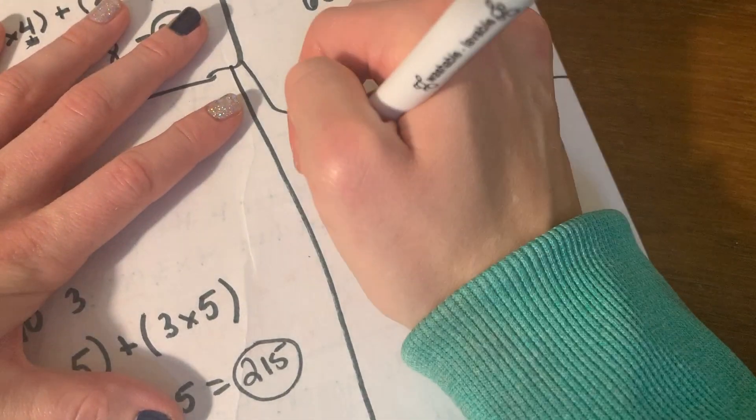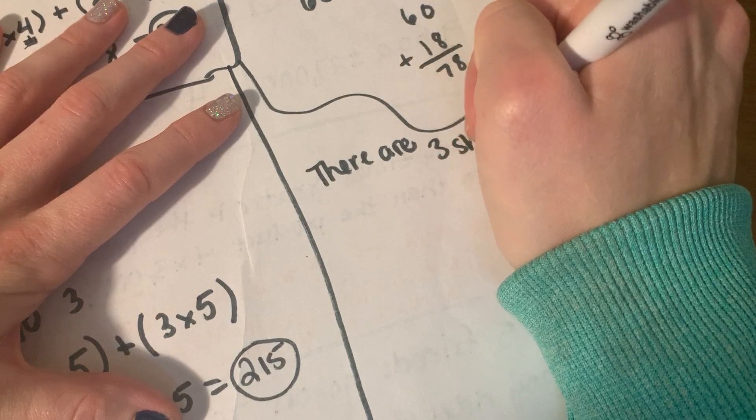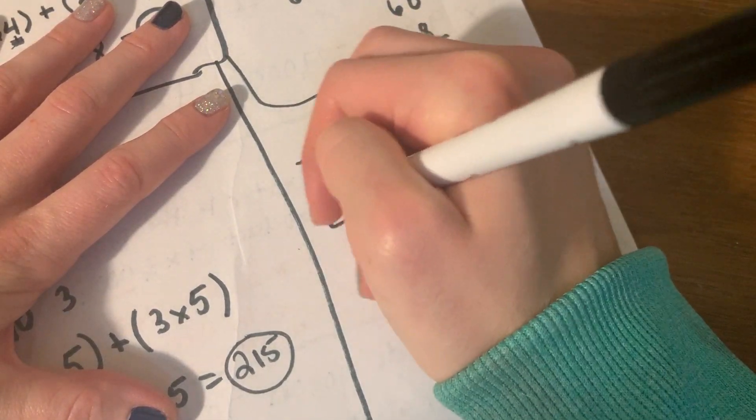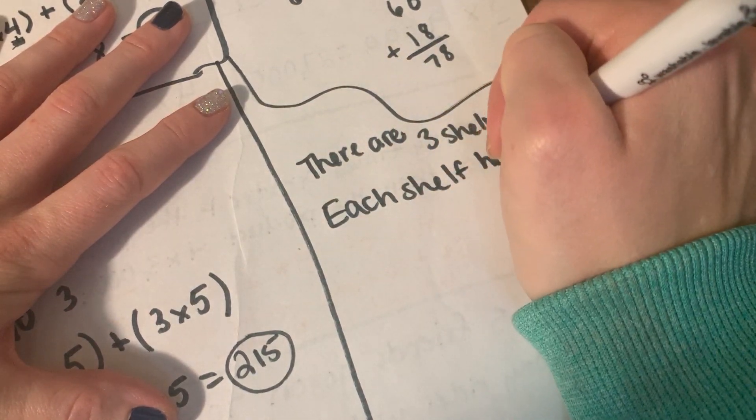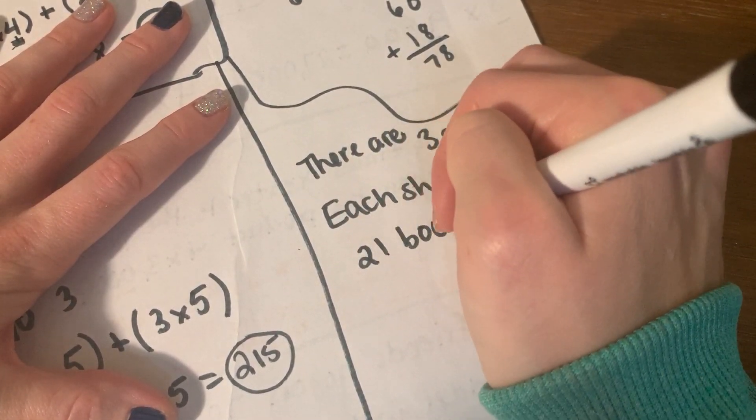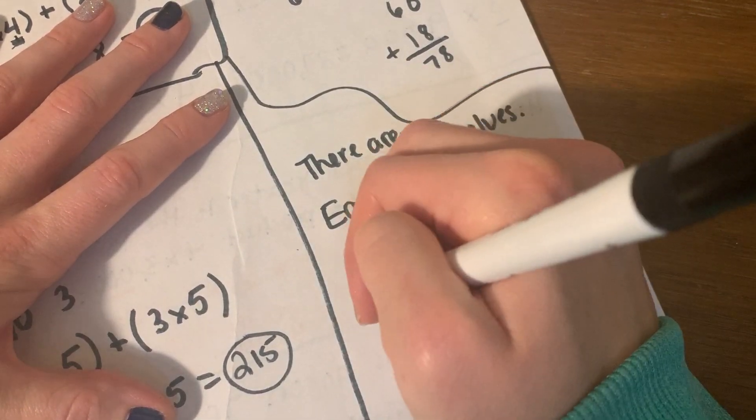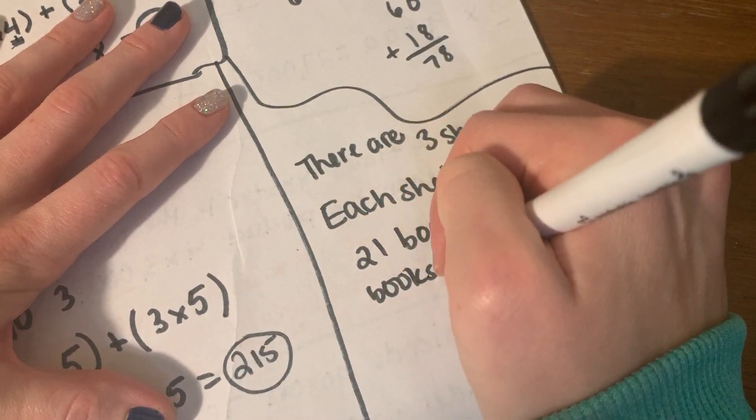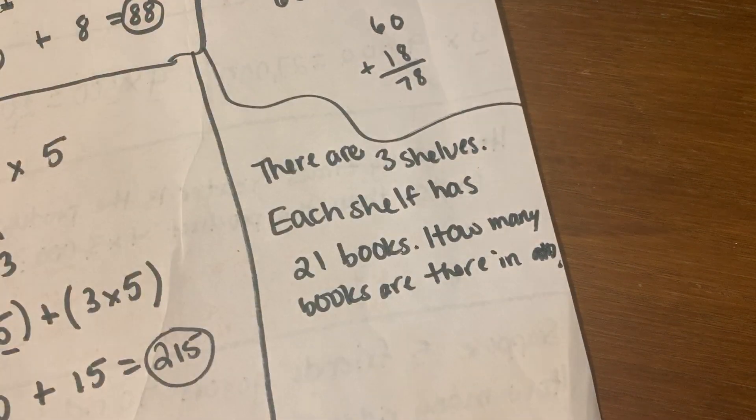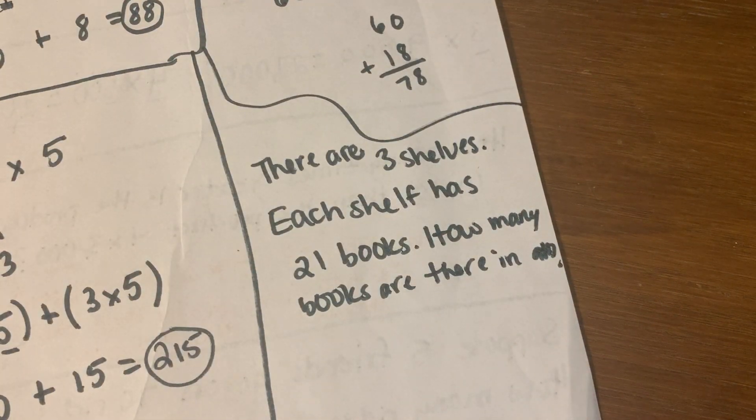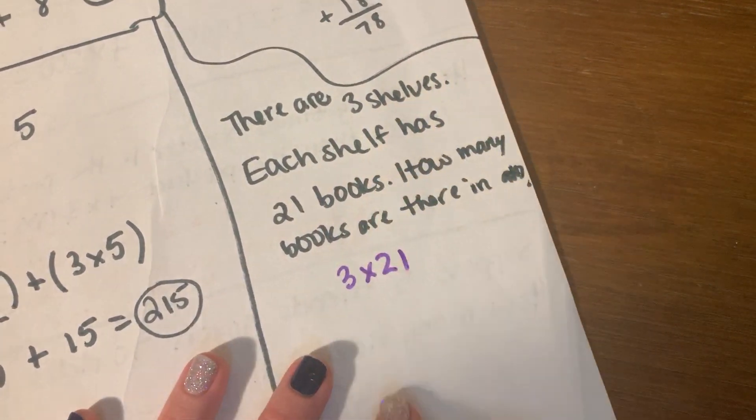All right, here's what it says. There are three shelves. Each shelf has 21 books. How many books are there in all? Okay, sorry that's a little crammed on the end. All right, so there's three shelves and there's 21 each. So 3 times 21.